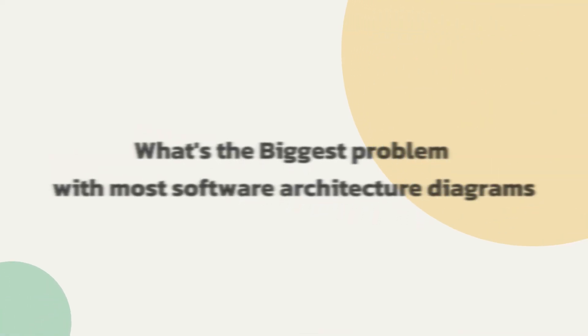Hey there guys, Chet here. What is the biggest problem with most software architecture diagrams? They're always out of date, almost all the time. A developer makes a change to the code but forgets to update the diagram and pretty soon the diagram is a lie.